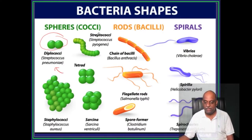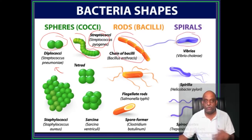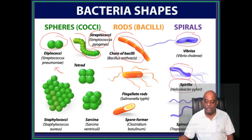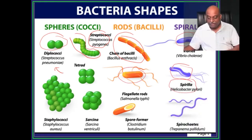And you have Streptococcus pyogenes. Then Bacillus anthracis is a chain of bacilli. Comma shaped is the Vibrios. Spiral shaped is Helicobacter pylori. And Salmonella typhi is an example of a flagellate rod — that is what you need to remember. Then the spore forming is Clostridium botulinum.